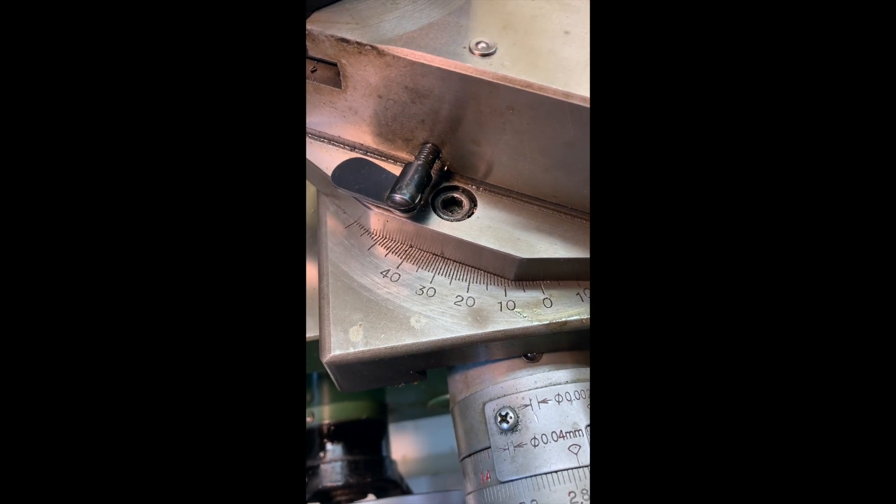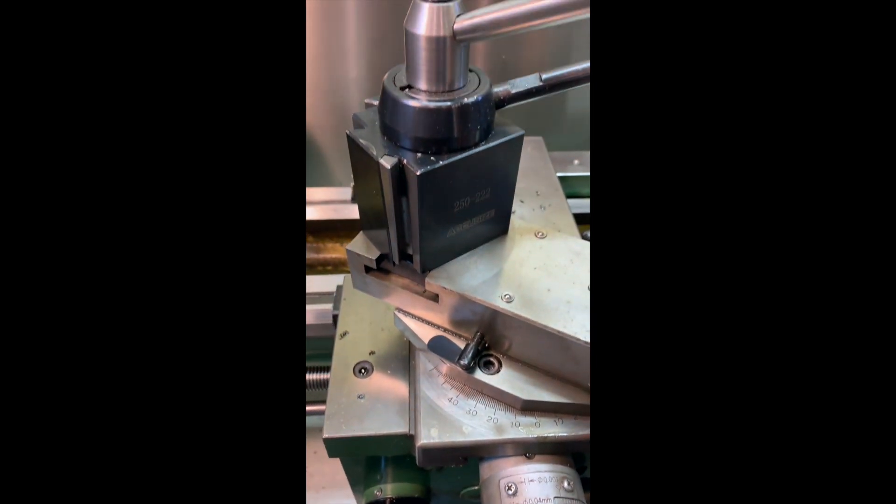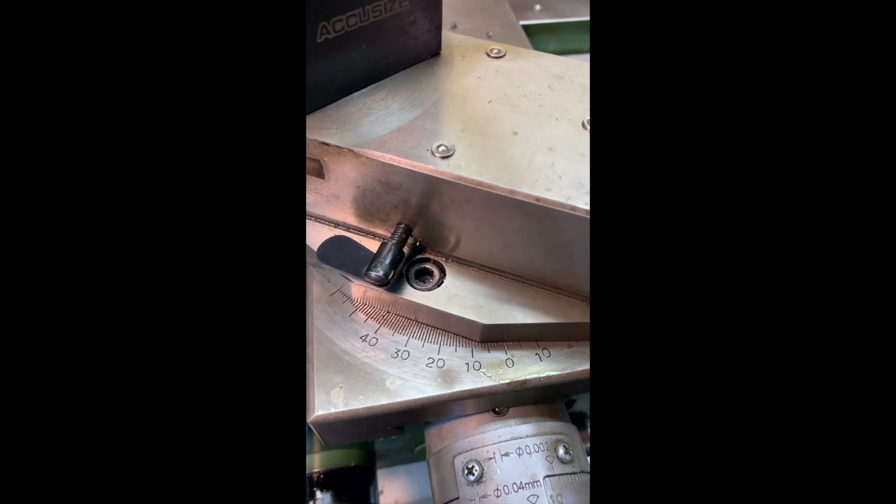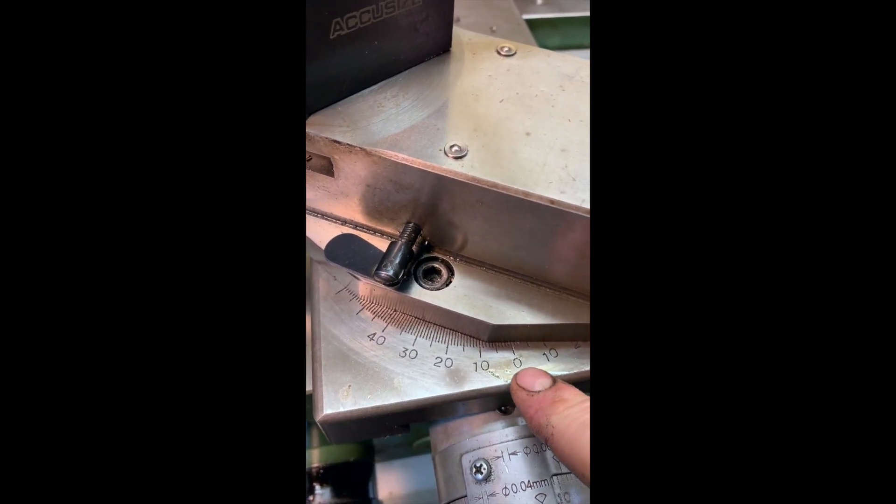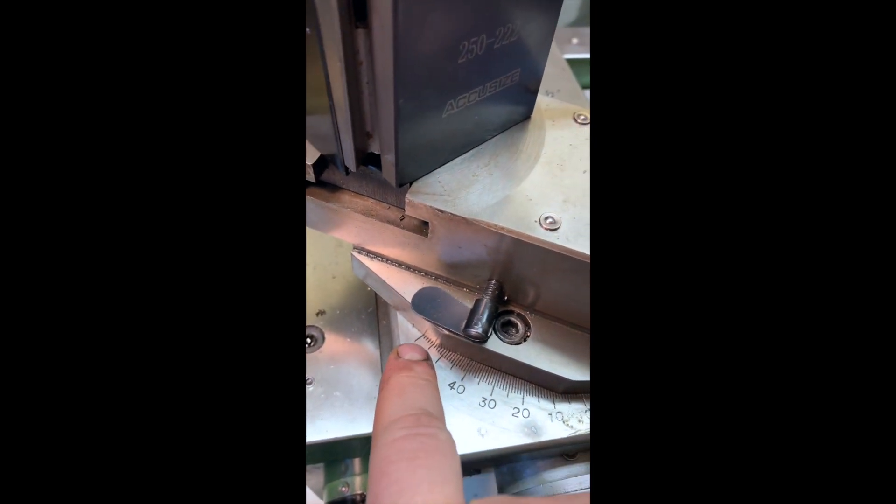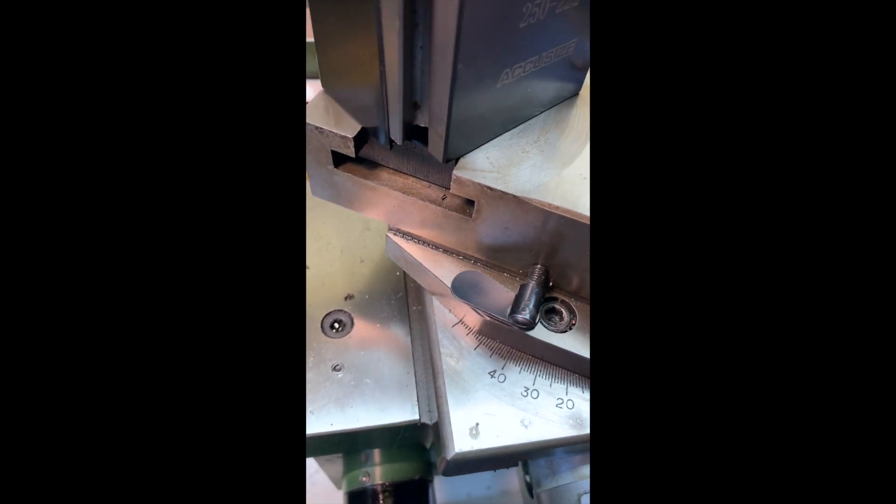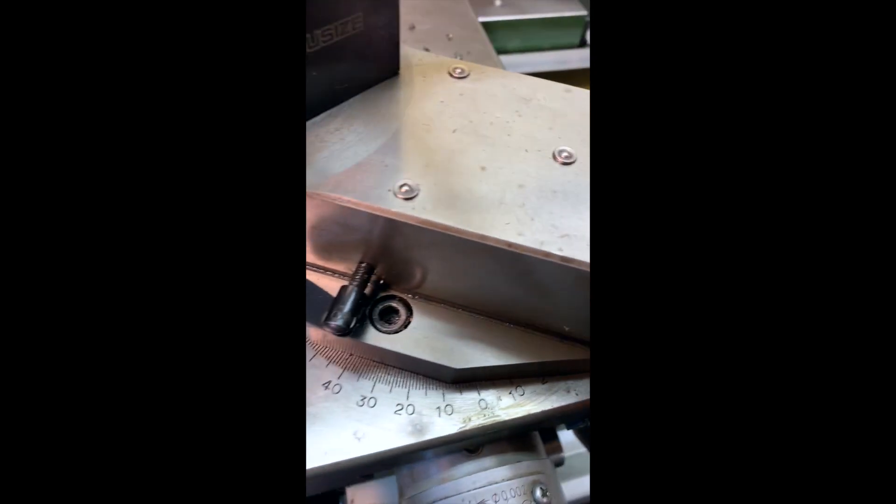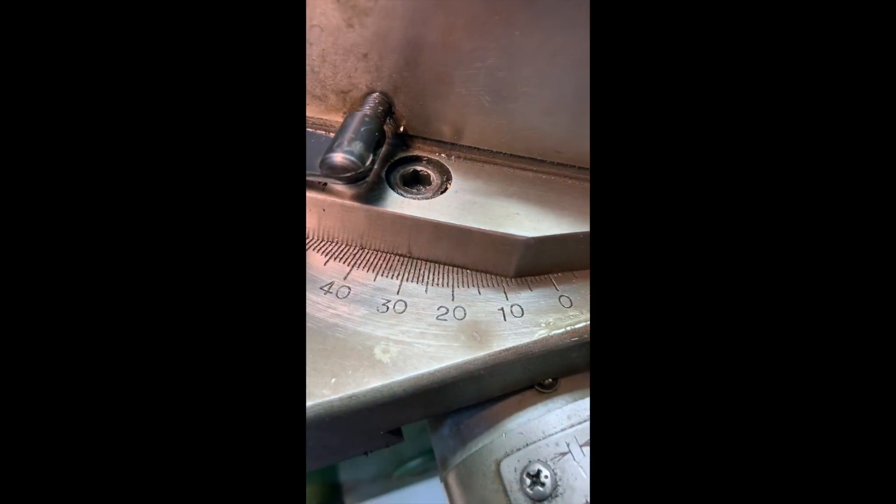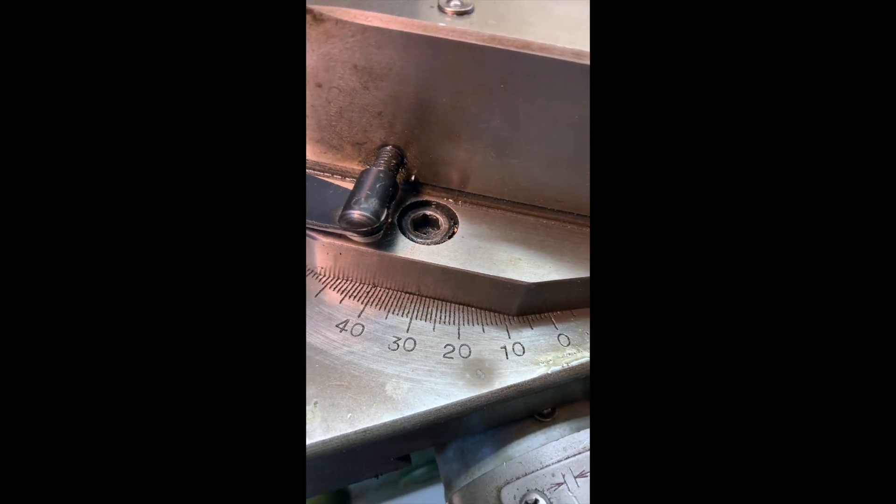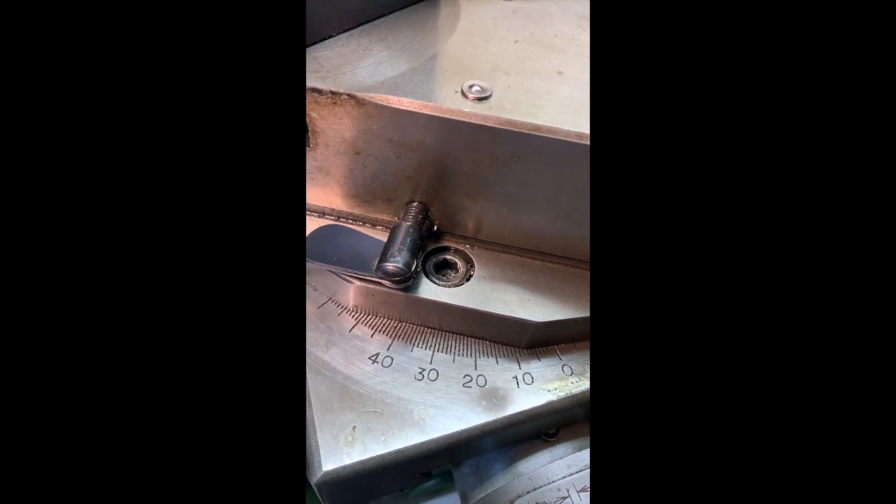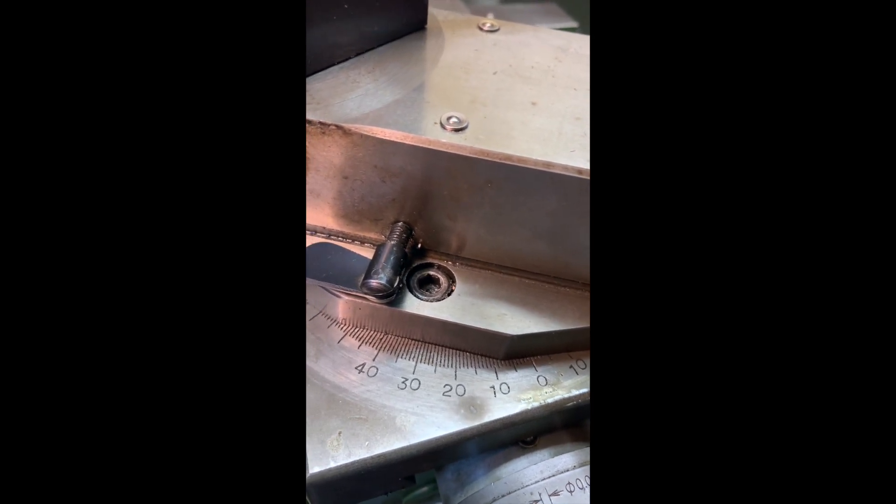Alright, so here on my lathe, you can see the compound here. You can see that the marks go from zero up to actually about 60 degrees. And if you were to watch a lot of videos, it'll tell you to set it to 29 degrees. Here's my little marker. But if you set that to 29 degrees, that's not right. And a lot of little Chinese lathes, a lot of little hobby lathes, they're also marked out just like this.